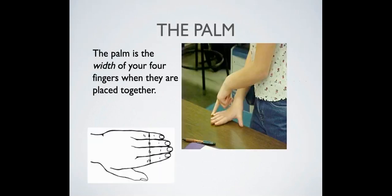A palm. This is the width of your four fingers when they are placed together. You would place them as this girl has on the table — that would be one palm. You could spin it over: two, three, four, and so on.